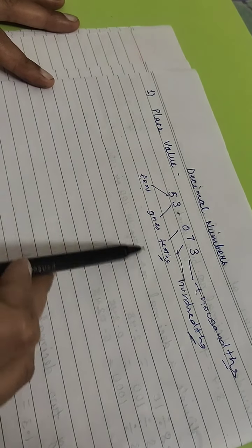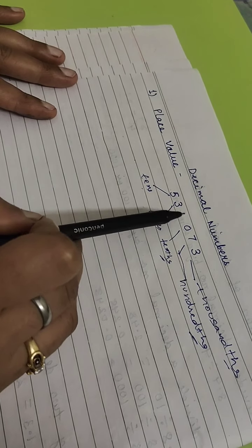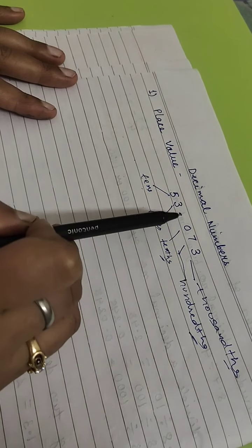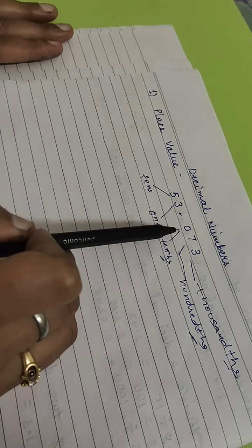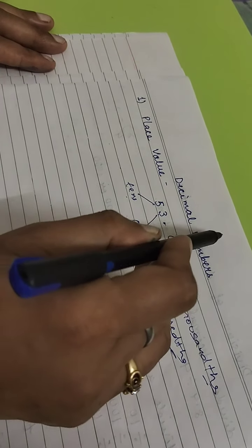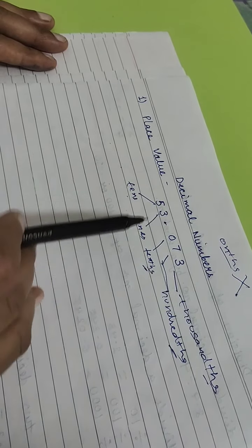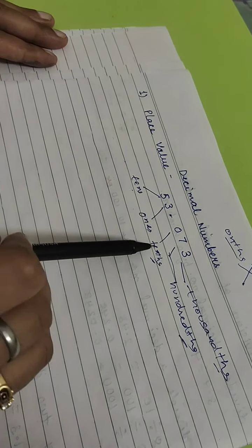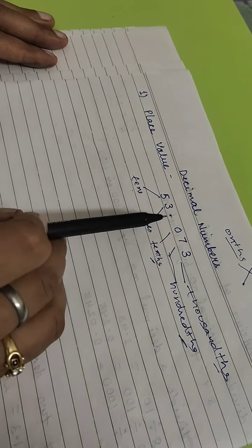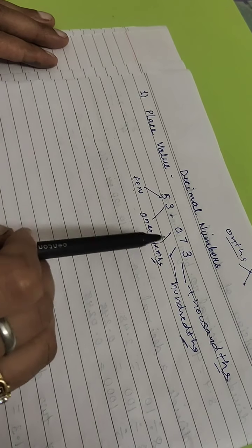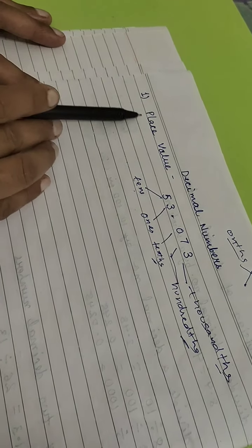Remember, don't be confused — when we move towards the right just after the decimal, there is no position like 'ones.' Nothing like that. That is wrong. We start with tenths after the decimal towards the right.